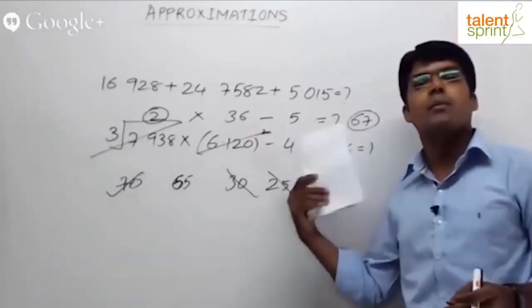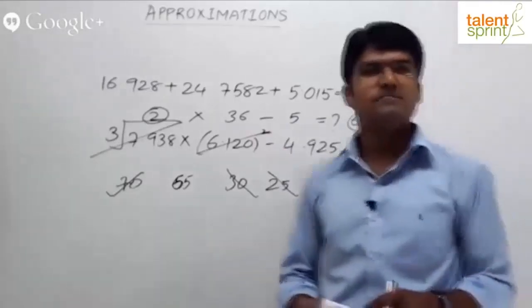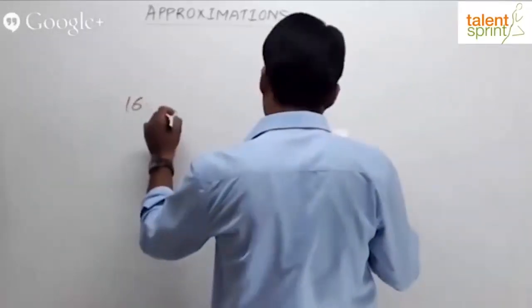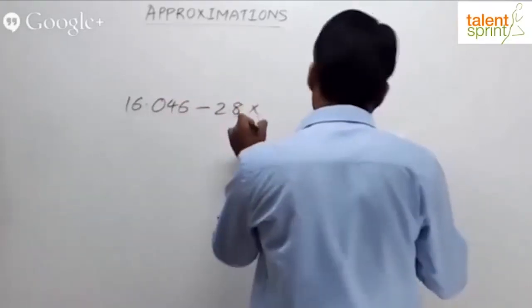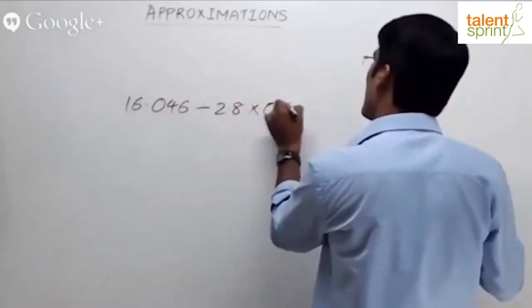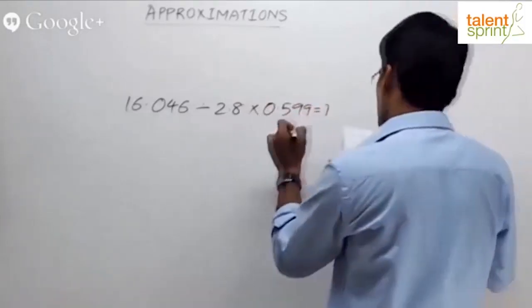16.046 divided by 2.8 into 0.599 is equal to what? The options are 3.5, 7.9, 1.9, 5.6, 6.2.